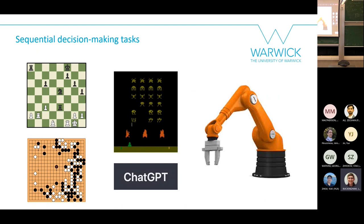Reinforcement learning is generally applied to what are called sequential decision making tasks. Examples include board games like chess and Go — you've probably heard of AlphaGo, AlphaZero, MuZero. Beating the best human player at Go in around 2016–2017 was a huge step forward and made reinforcement learning very much in vogue. It also coincides with when I was choosing my PhD. RL is also used in playing computer games, controlling robots, and one part of ChatGPT.